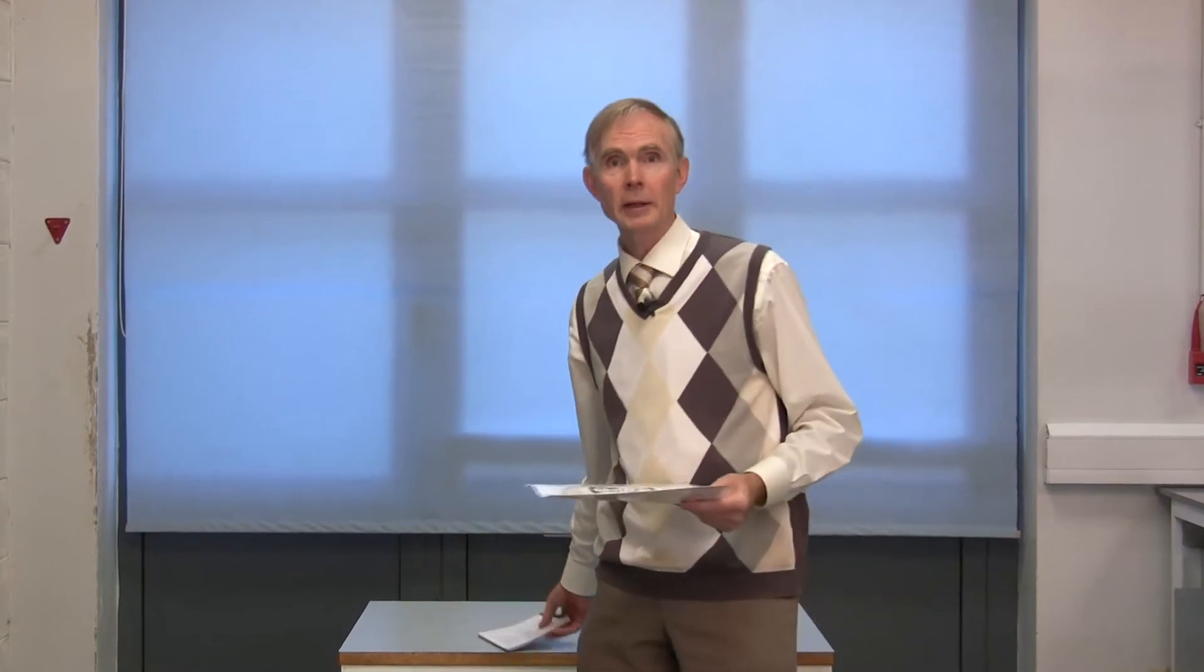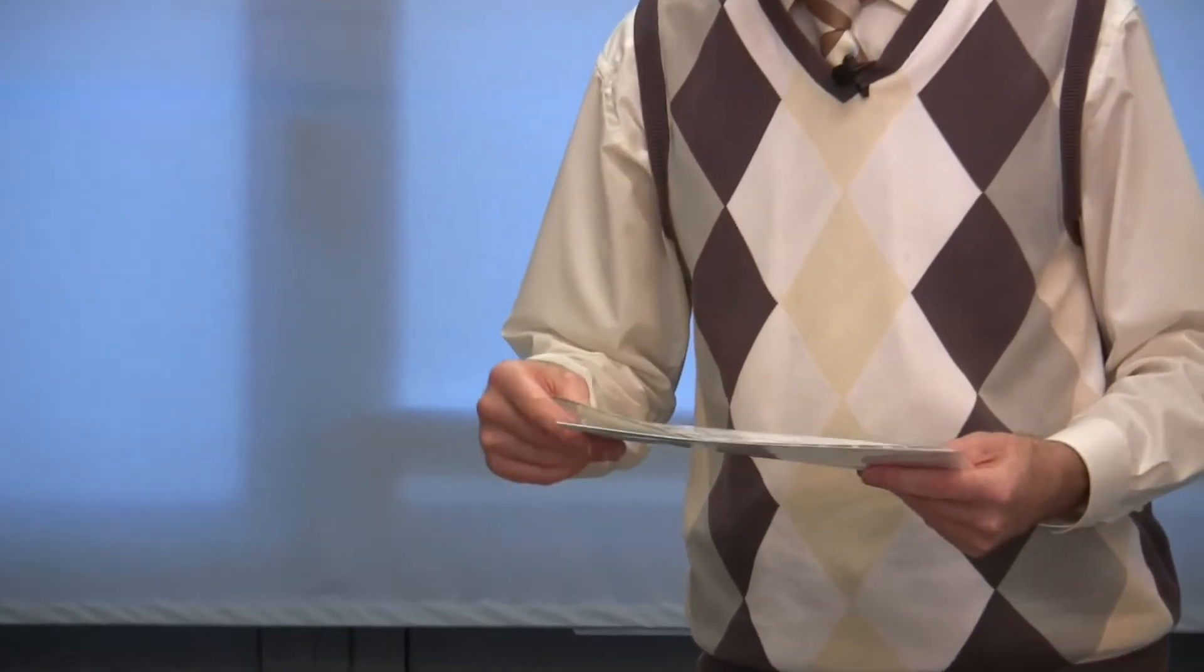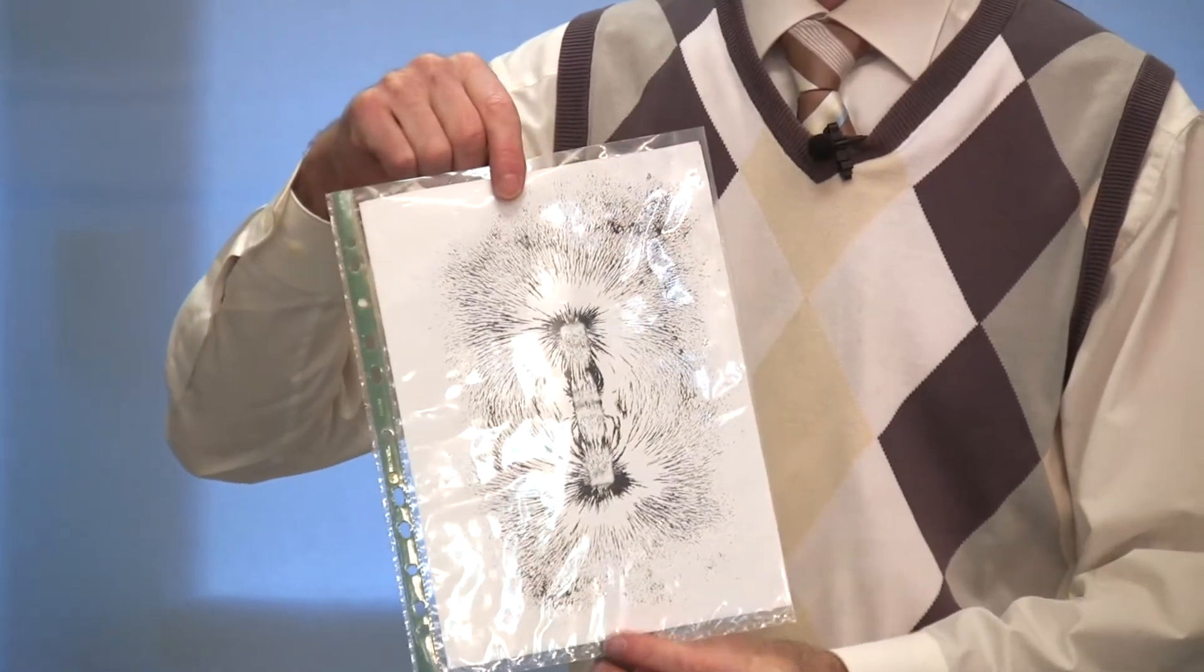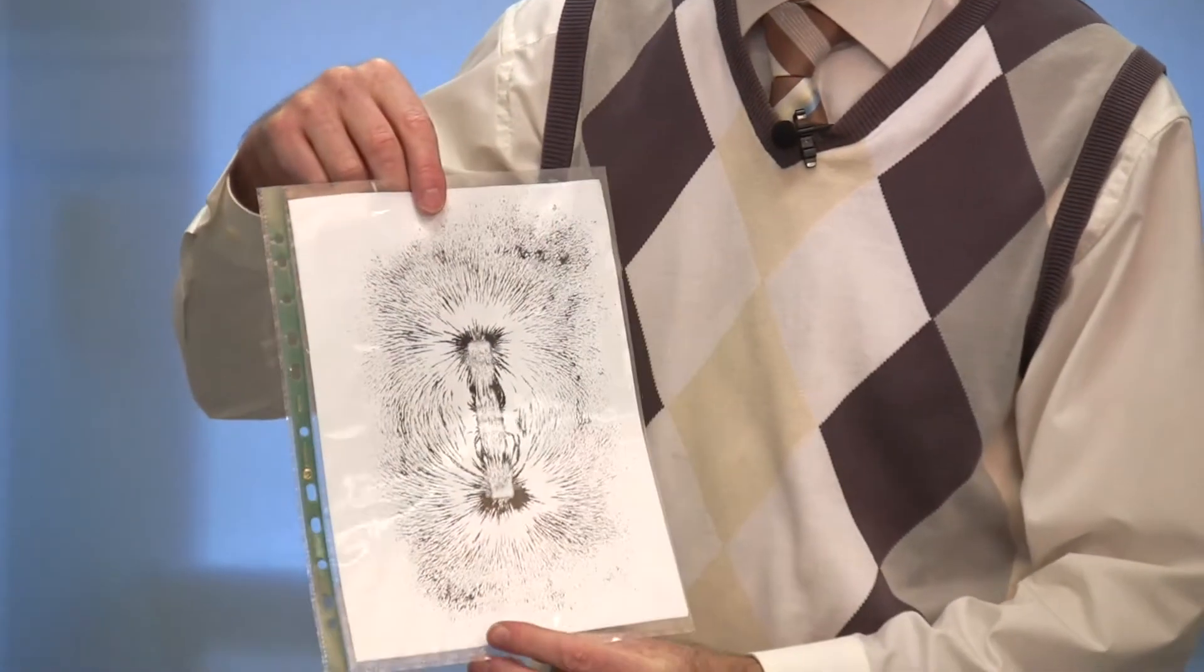If you sprinkle iron filings on top of a photocopier carefully and then put a magnet near it, if you tap the glass on the photocopier, the filings will form the shape of the magnetic field. You can then photocopy the iron filings directly on the glass of the photocopier.